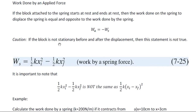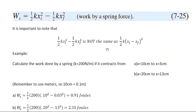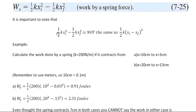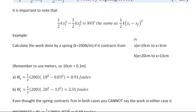Be careful, though — if the block is not stationary before and after the displacement, this statement is not true. It is also true if the block starts and ends at the same velocity, since the change in kinetic energy would still be zero. Additionally, a common mistake students make is thinking that one half kx initial squared minus one half kx final squared is the same as one half k times the quantity x initial minus x final, squared. That is not the same expression.